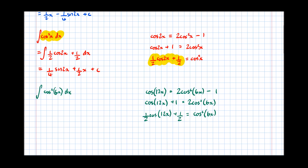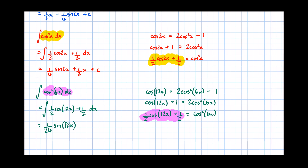We've replaced something we couldn't integrate with something we can integrate. So that's the same as the integral of one half cos(12x) plus one half dx. Cos integrates to sine, then we divide by the differential of the bracket — the differential of 12x — which is 12, so that becomes one twenty-fourth of sin(12x) plus one half x, plus c.